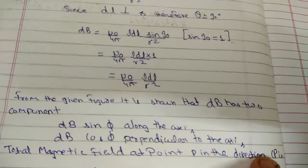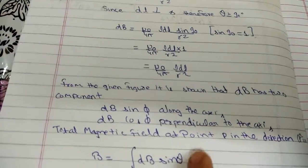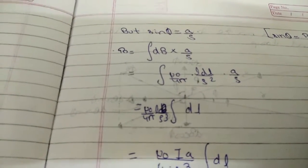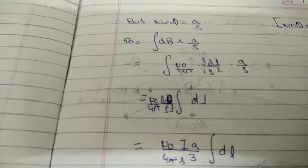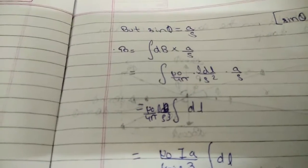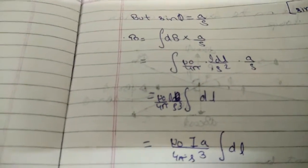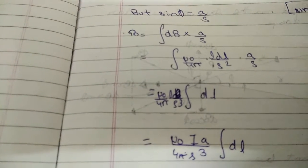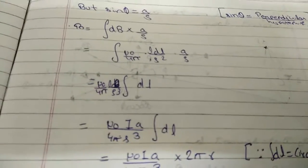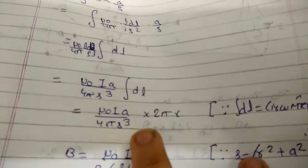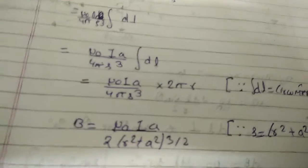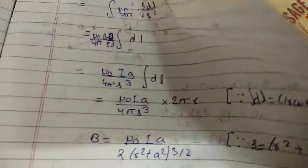The total magnetic field at point p along direction cp is given as B equals integral of dB sin phi. We know sin phi equals a by s. So B equals integral of (mu0 idl upon 4 pi s squared) times a by s. The constant mu0 upon 4 pi s cubed comes outside. On integrating dl we get 2 pi r, since dl is the circumference. And s equals (r squared plus a squared) raised to the power 1 by 2, so s cubed is (r squared plus a squared) raised to the power 3 by 2. Final result: B equals mu0 i r squared upon 2 times (r squared plus a squared) raised to the power 3 by 2.